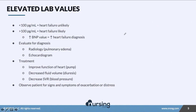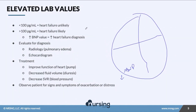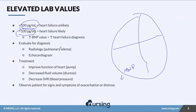Let's look at elevated levels, how we're going to treat it, and how we're going to further diagnose. Anytime the ventricles stretch, BNP is released to try to help get rid of fluid volume. A normal lab value is less than 100. As the level increases over 100, heart failure becomes likely. We'll also want radiology to check for pulmonary edema — a result of heart failure — which makes it harder and harder for patients to breathe. An echocardiogram can also give us a clear picture of what's going on with the heart.